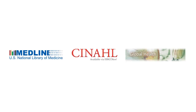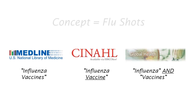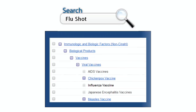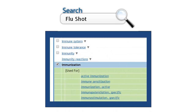It is important to remember that different databases may use slightly different subject headings to represent the same concept, so switching between databases may require a little bit of translation. Thankfully, most databases offer the ability to search or browse through their subject headings to find the concept you are trying to represent. Subject headings will be arranged in either a hierarchical list, with broader terms appearing above narrower ones, or listed alphabetically from A to Z.